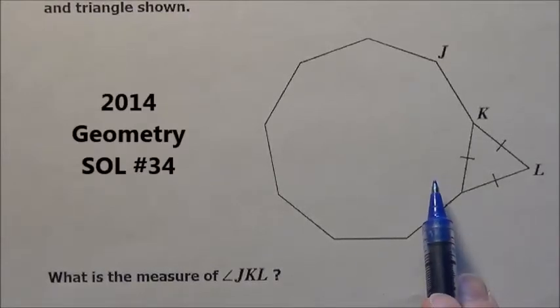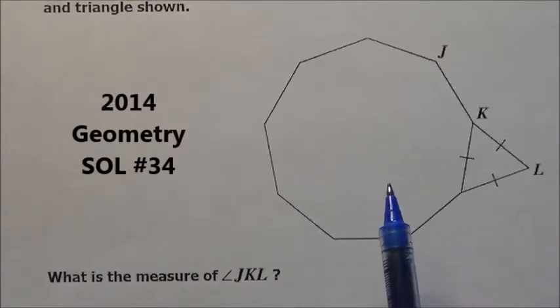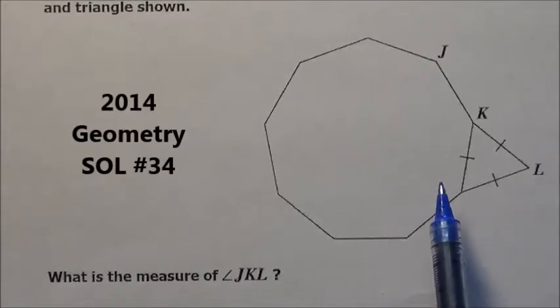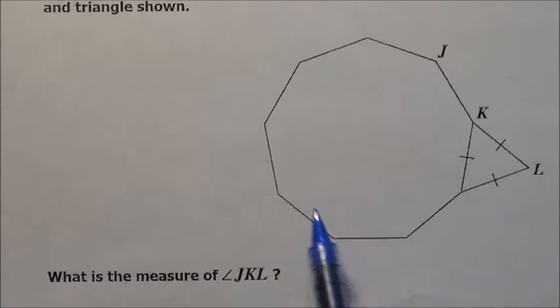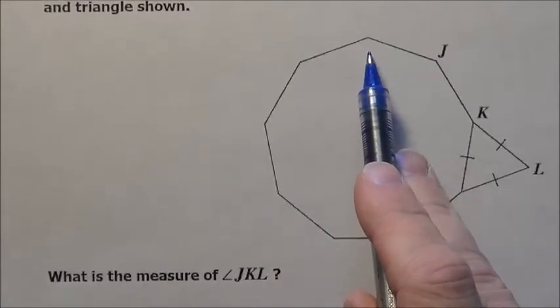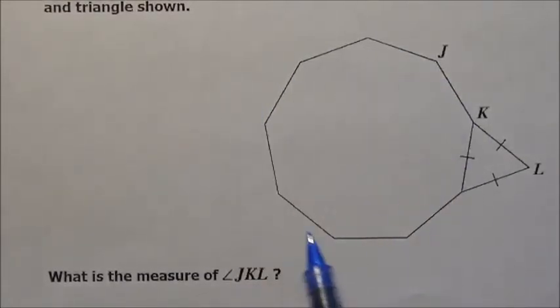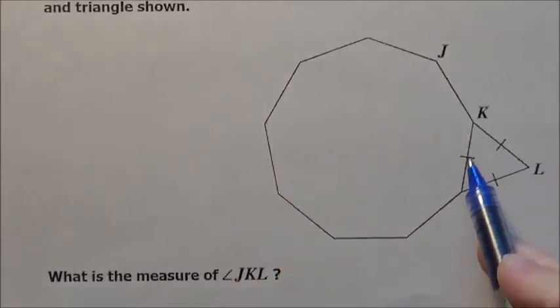Here's problem 34. I've zoomed in on the picture. It says the floor plan for a modern home is modeled by the composite of a regular nonagon. So this is regular, meaning all sides are the same length and all angles are exactly the same, and it has 9 sides. That's what it means by a nonagon. And then there's a triangle right here.